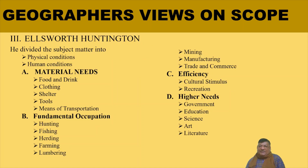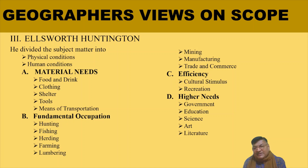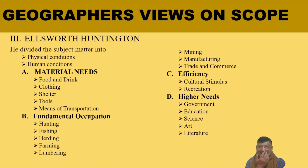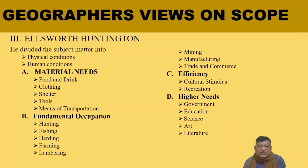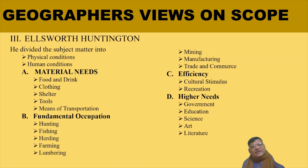Ellsworth Huntington divided the scope into two broad parts: physical conditions and human conditions. Under human conditions he included food and drink, clothing, shelter — our basic necessities. Fundamental occupations include hunting, fishing, herding, farming, lumbering, mining, manufacturing, and trade and commerce. Under efficiency he placed cultural stimulus and recreation. Higher needs include government, education, science, art, and literature, emphasizing these as the core scope of the subject.